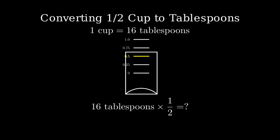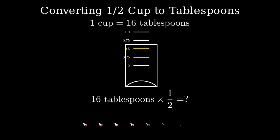Let's visualize sixteen tablespoons. Here are our sixteen tablespoons, arranged in two rows of eight. When we take half of these, we'll be left with just eight tablespoons.